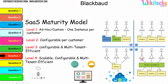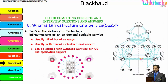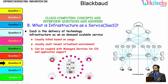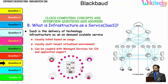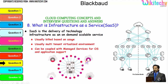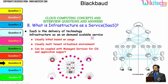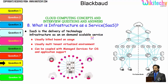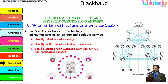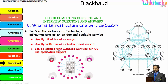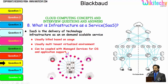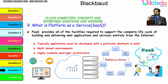Now let's talk about Infrastructure as a Service. You will be allocated with your server and whatever OS you want you can put it, and whatever software you want you can put it. IaaS is a delivery of technology infrastructure as an on-demand, scalable service built based on usage — usually multi-tenant, virtualized, and can be coupled with managed services for OS and application support. Now here is Platform as a Service.